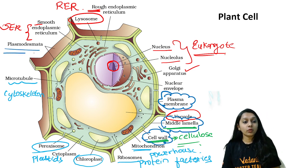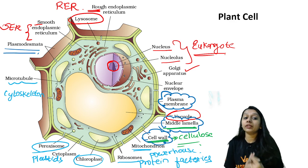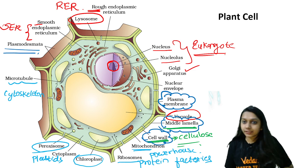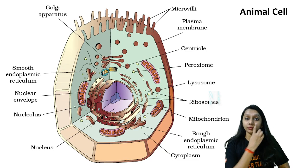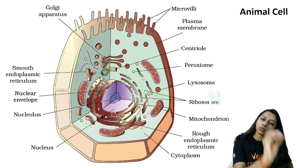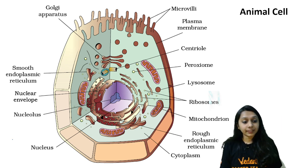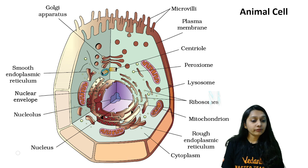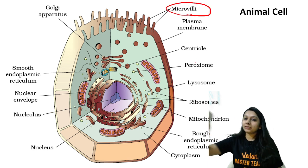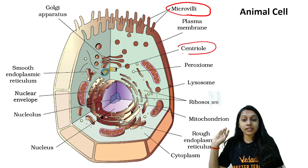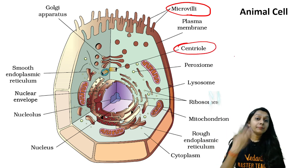Plasmodesmata are connections between two neighboring cells — we call them plasmodesmata. Now, if you compare plant and animal cells properly, they will be a little different. Microvilli are present in animal cells but not plant cells. Plasma membrane is present in both, but centriole or centrosome is only in animal cells, not plant cells.